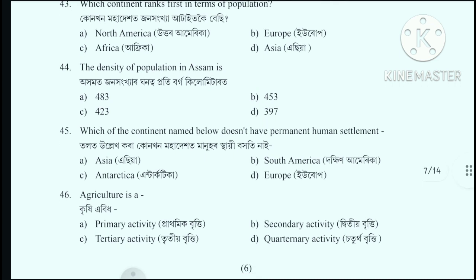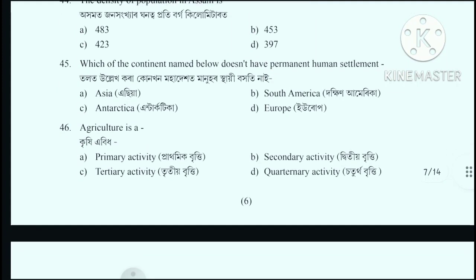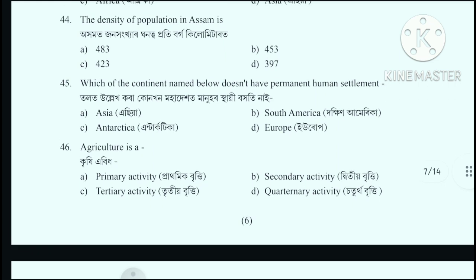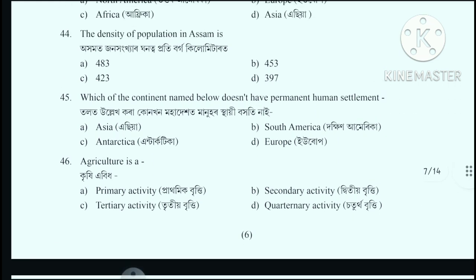Question number 45: Which of the following continents does not have permanent human settlement? Question number 46: Agriculture is.